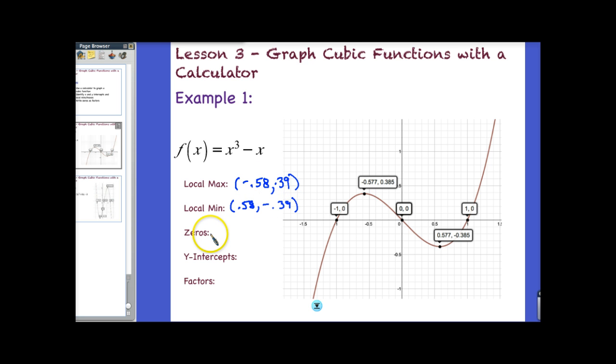So my zeros, zeros, remember, are just my x-intercepts, and sometimes we also call these the roots of the equation. So I have three of these. So it's important that I write them as coordinate points. So we have negative 1, 0. I have 0, 0. And I also have 1, 0. As far as y-intercepts, it only intersects the y-axis once, and that's at 0, 0.